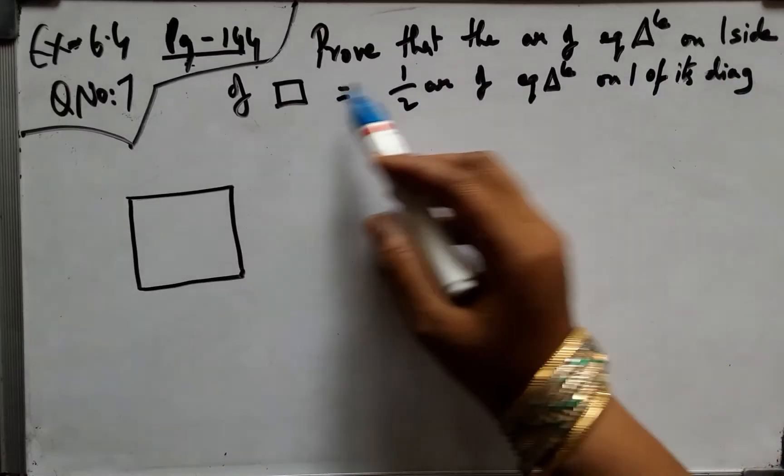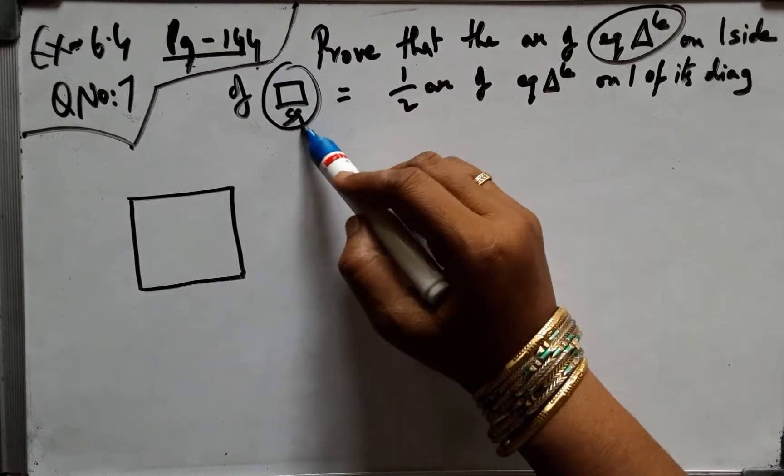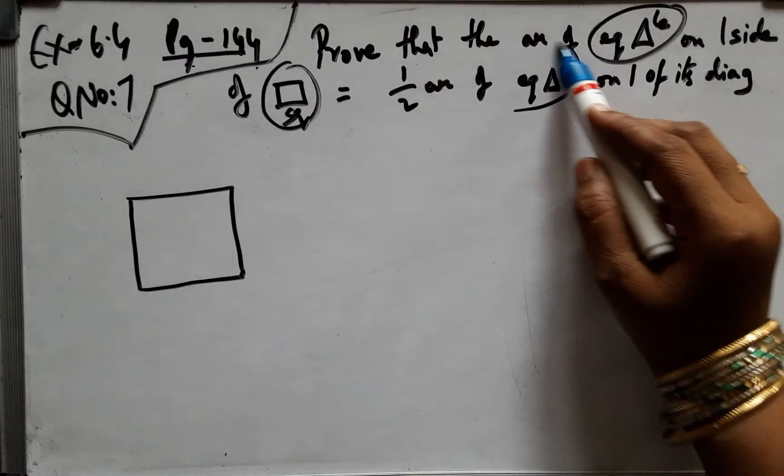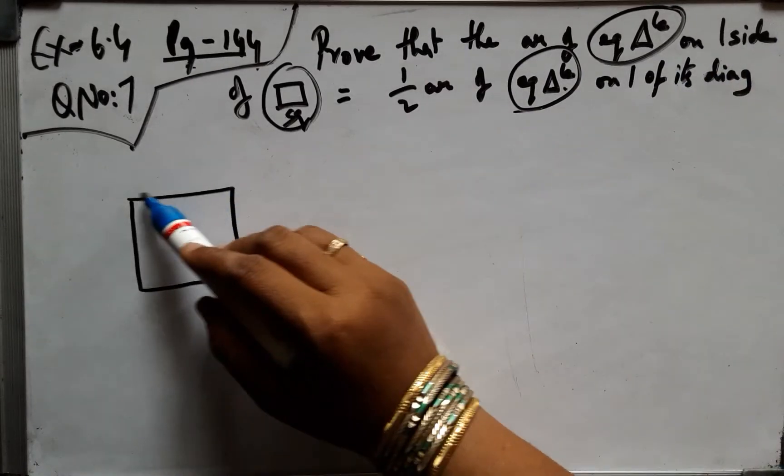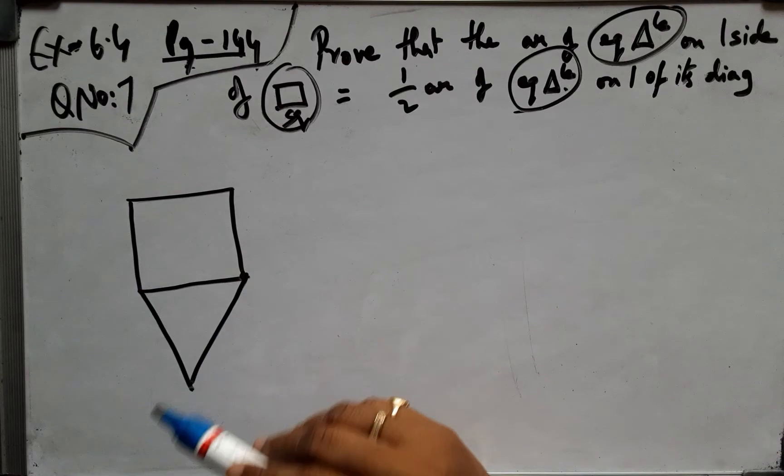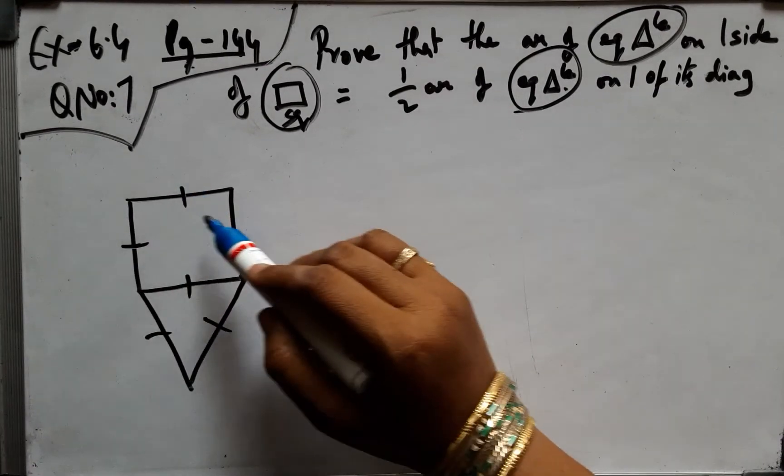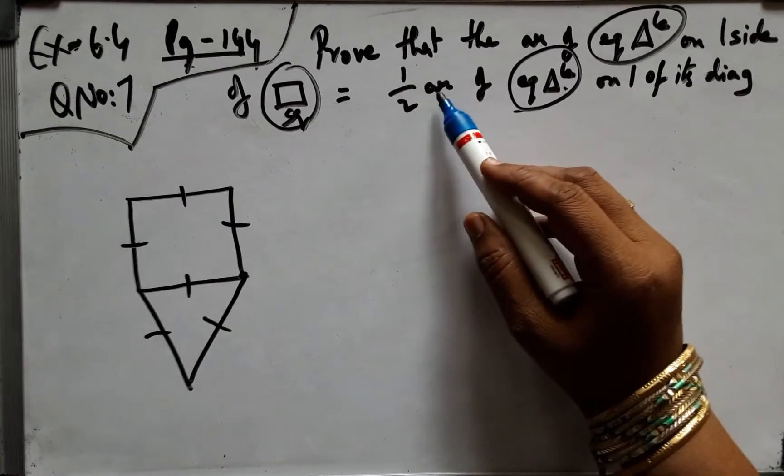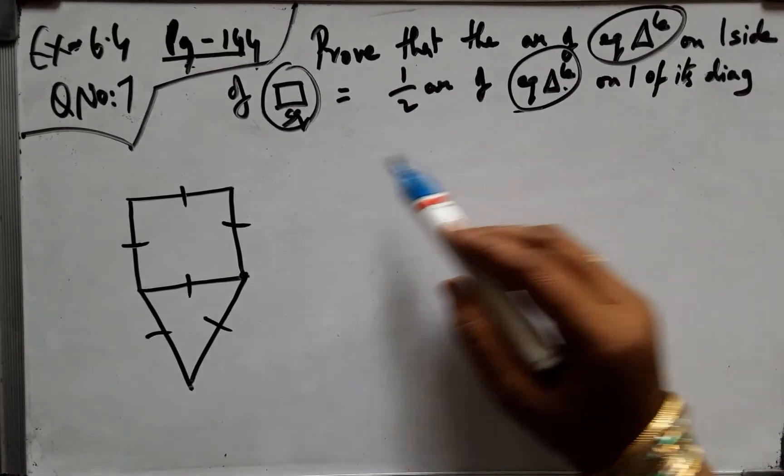I am going to discuss this question. Equilateral triangle and square - this is a square. Equilateral triangle. The area of the equilateral triangle on one side. All three sides are equal. It is equal to half the area of the equilateral triangle on one of its diagonals.